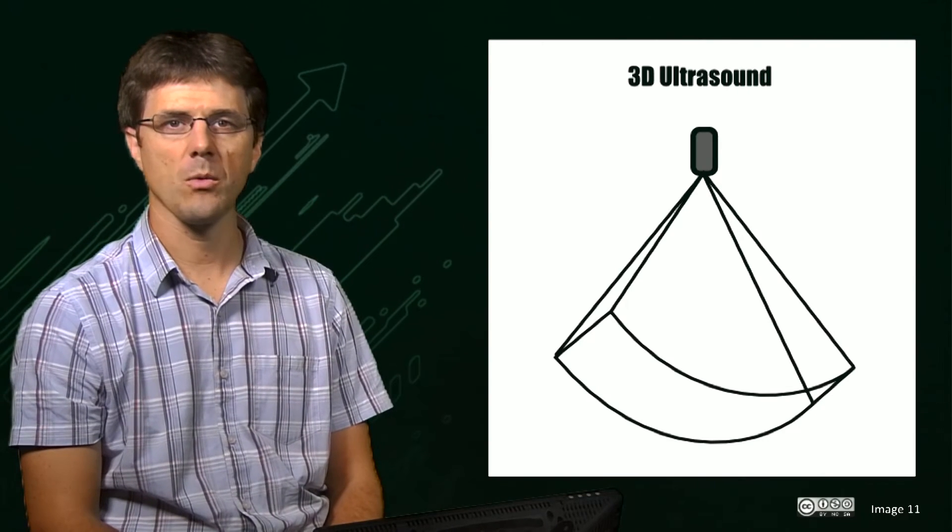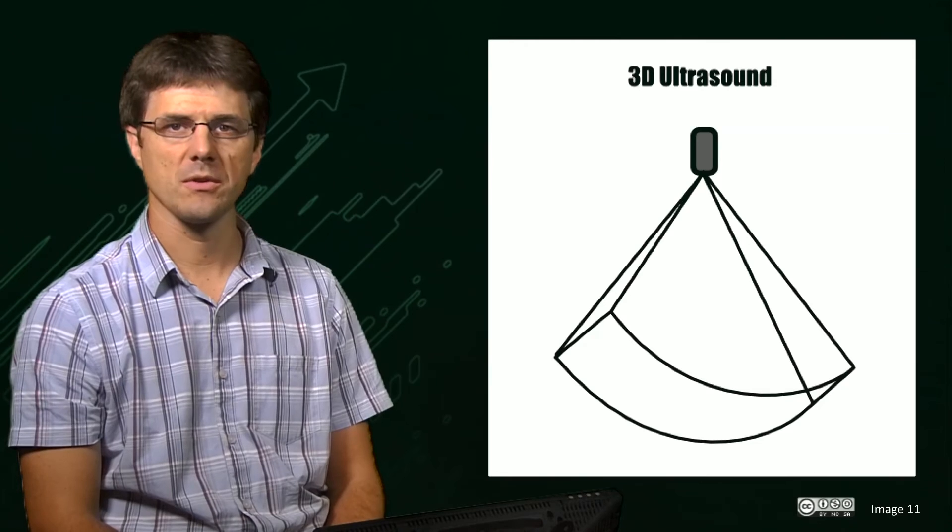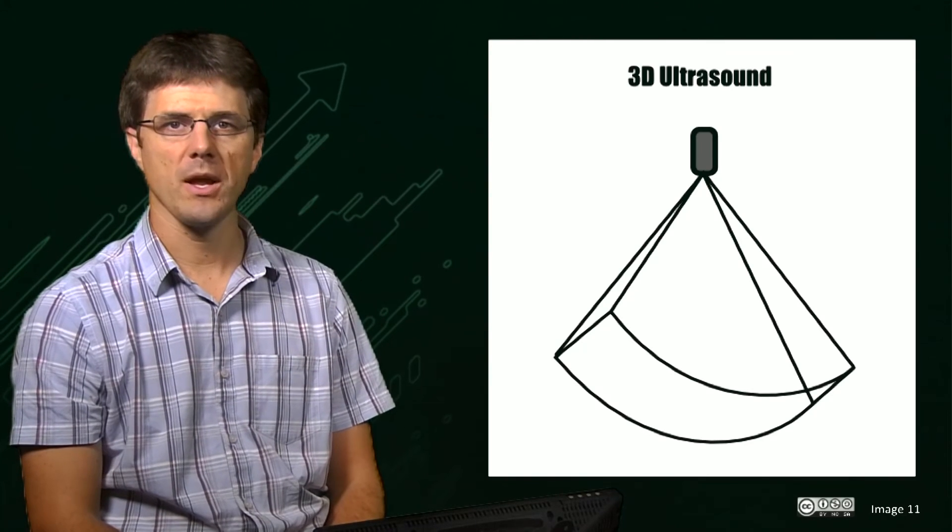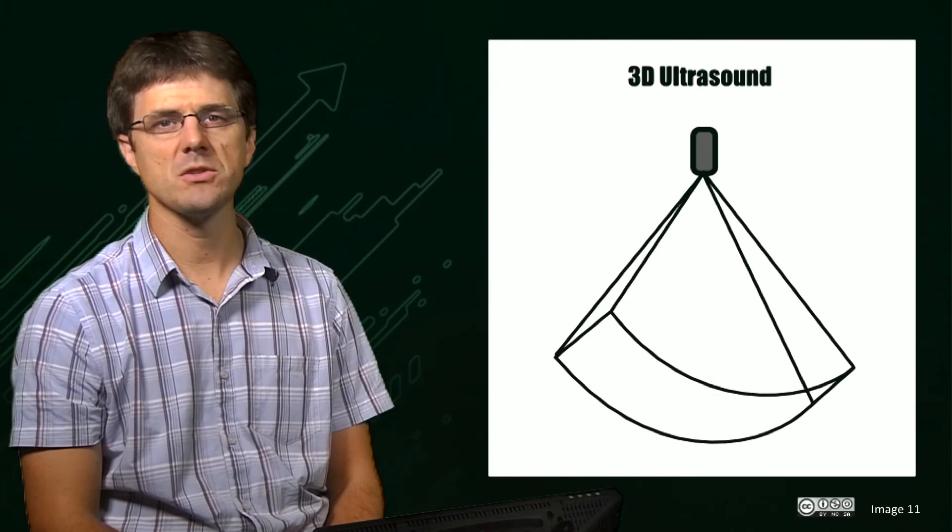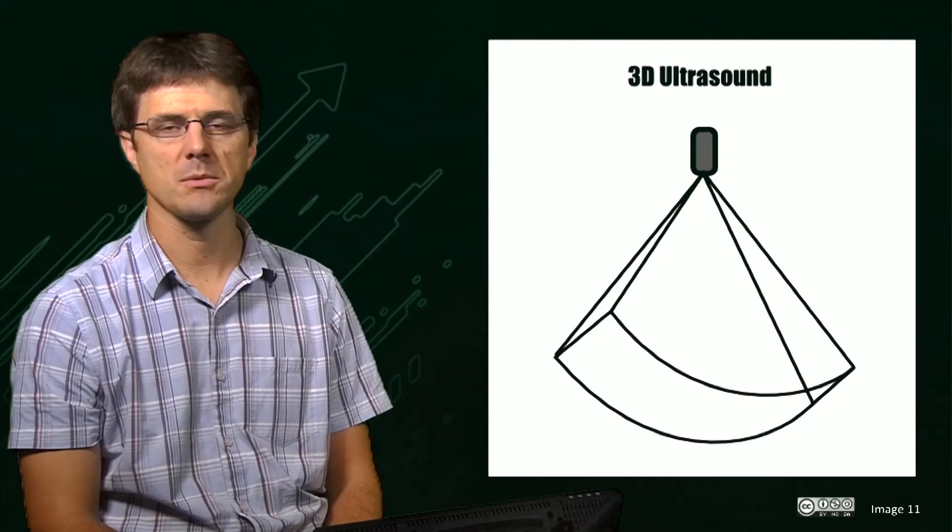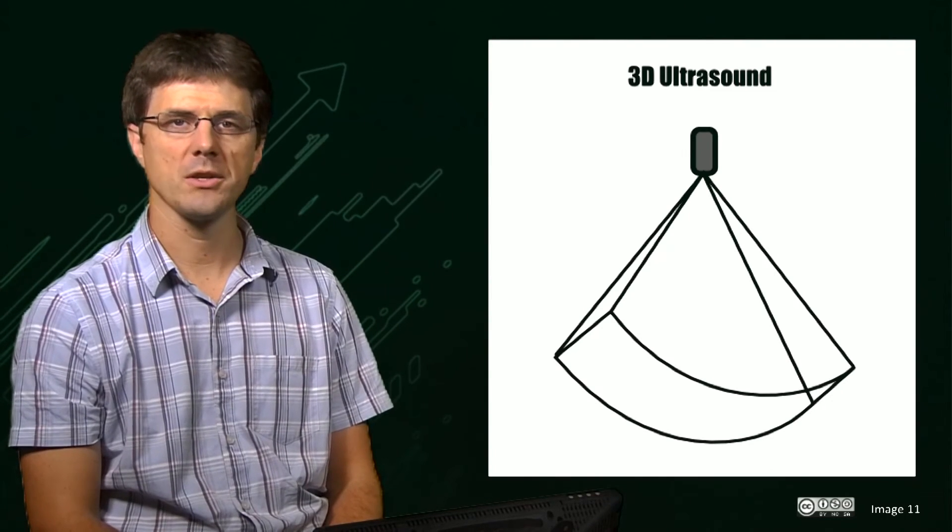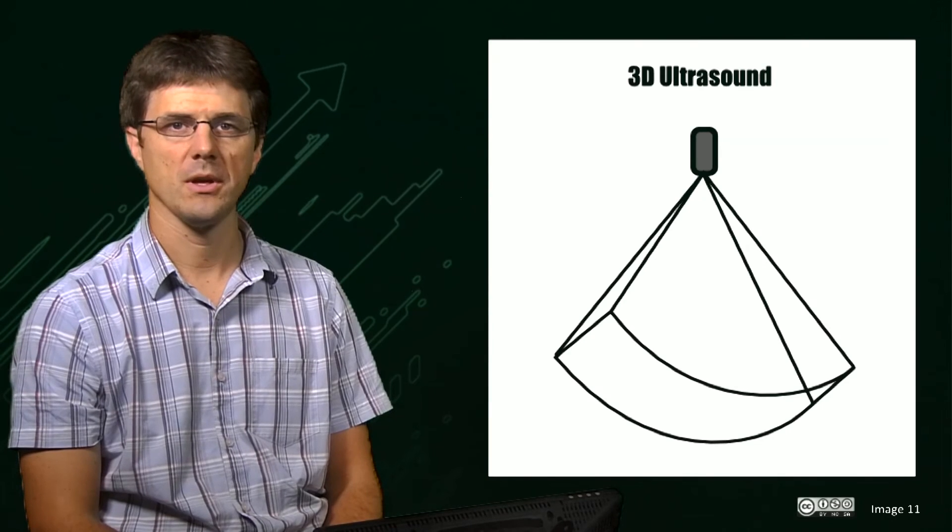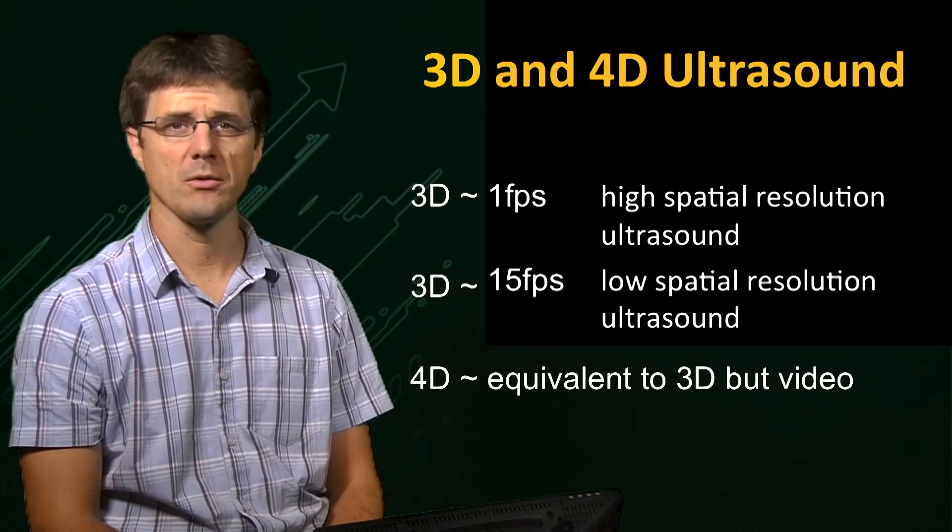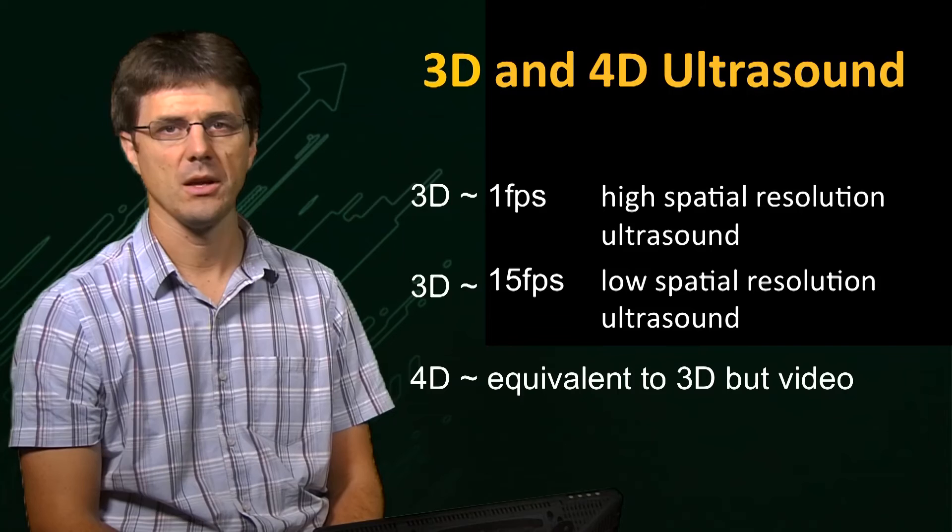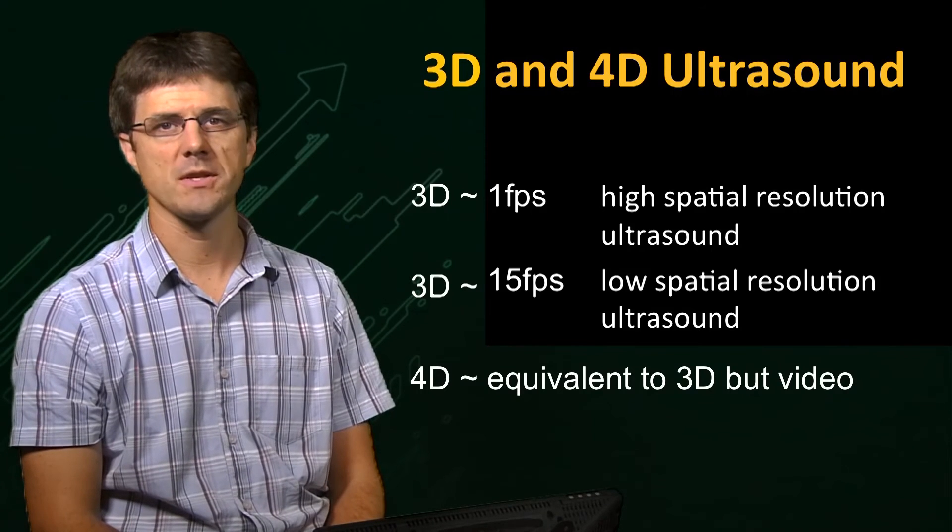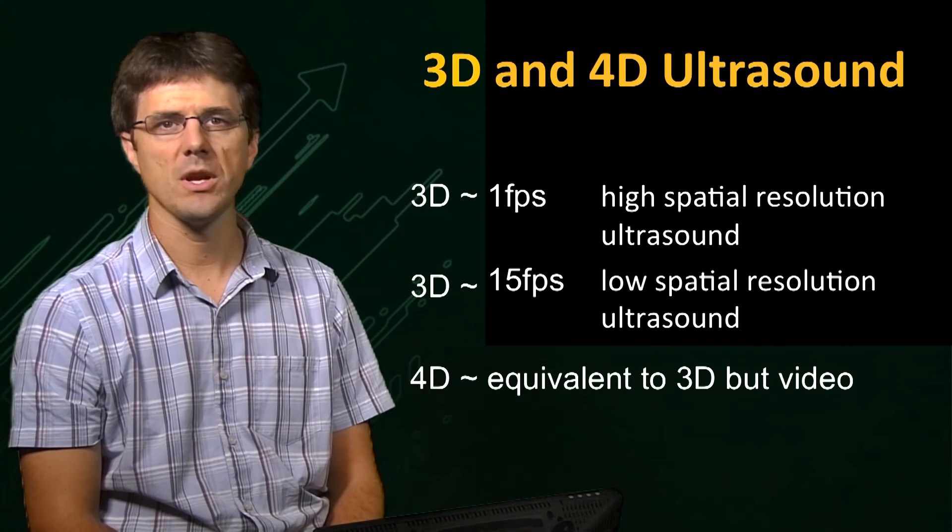What is actually acquired is a 3D trapezoid of data from a single point. The typical 3D acquisition will utilize about 50 2D acquisitions and take approximately 1 second to acquire a single 3D block of data. Given this low frame rate of approximately 1 frame per second, scanning moving objects is rather difficult and the sonographer will need a steady hand.